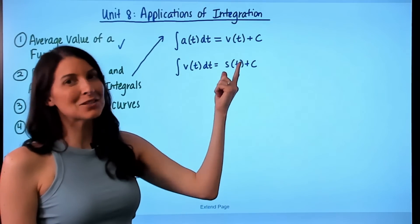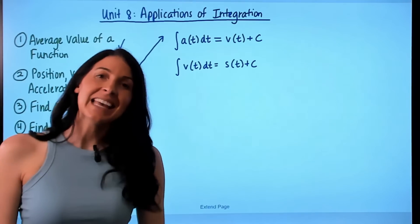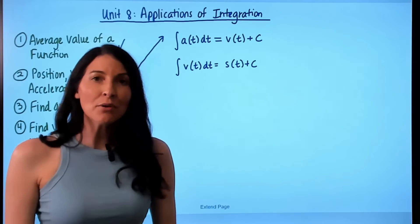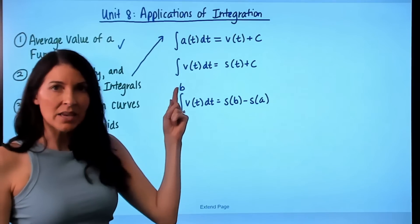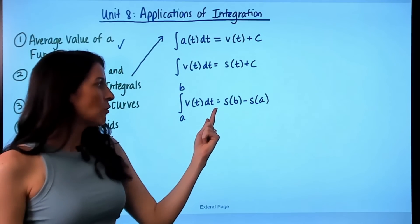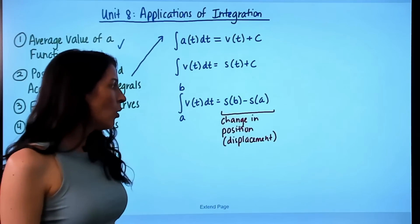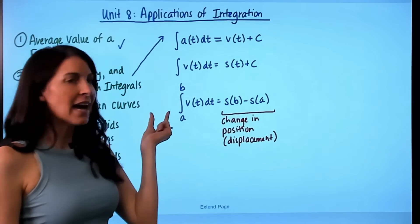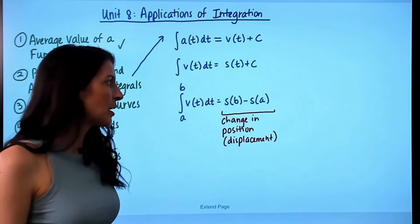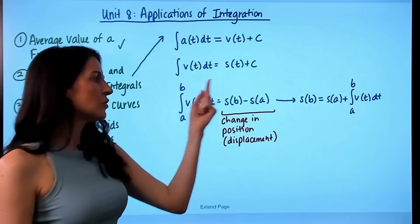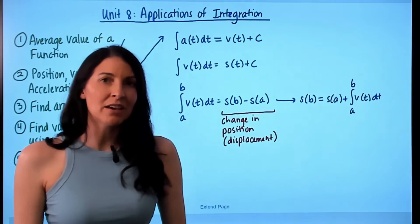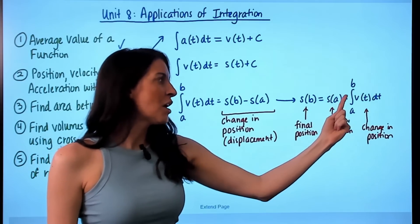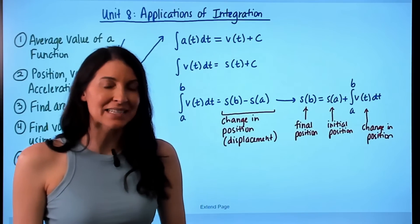You can then take the integral of velocity to find position, since the derivative of position is velocity. You may be given a specific position at a specific time value to solve for the constant C. Also useful: the integral from a to b of velocity equals s(b) minus s(a), or the change in position — the displacement. The net change theorem tells us that s(b) equals s(a) plus the integral from a to b of v(t) dt, meaning final position equals initial position plus change in position.